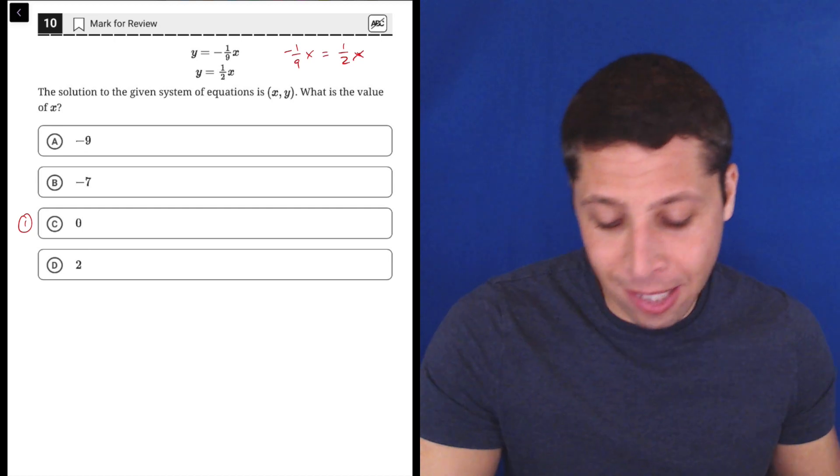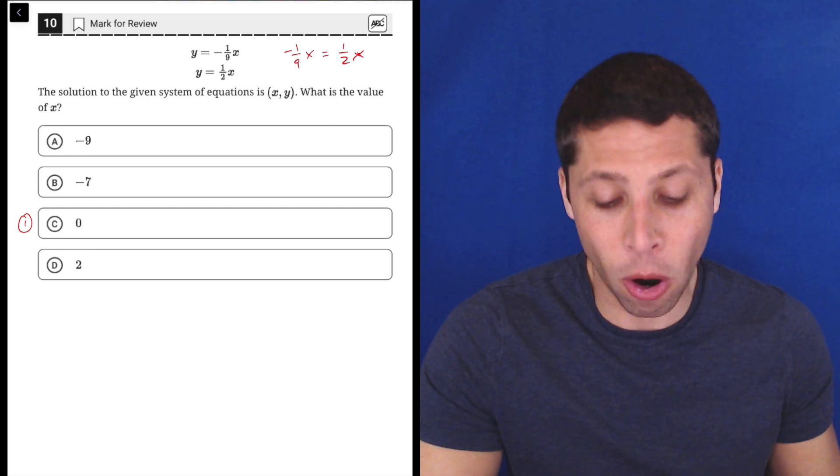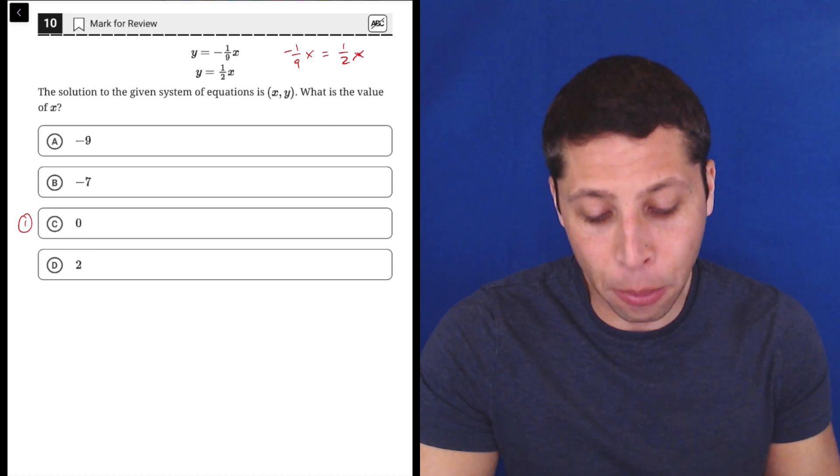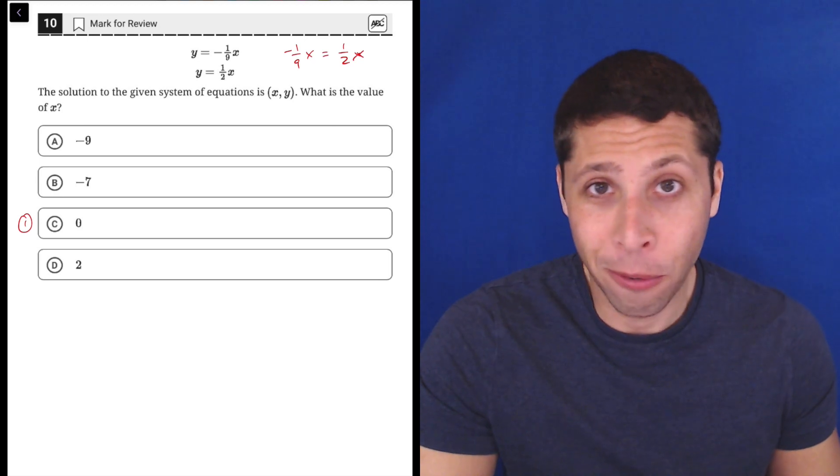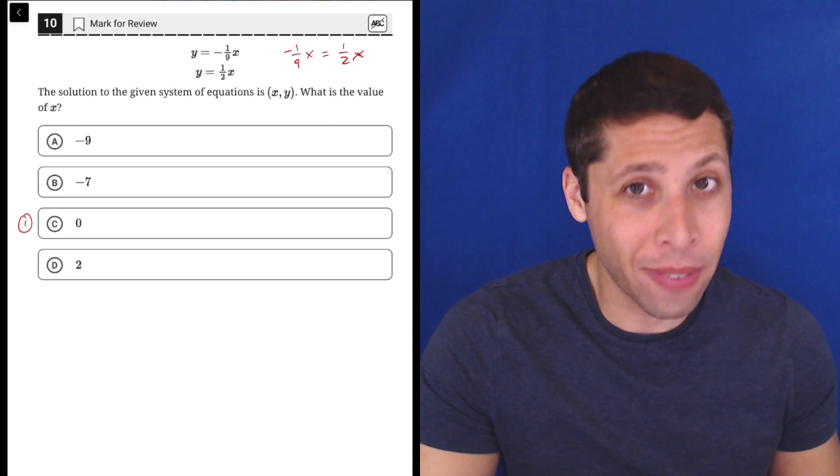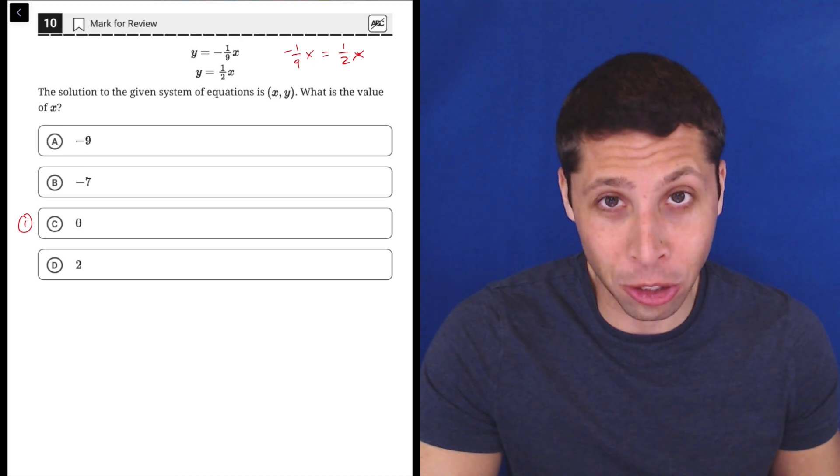This would be my first guess because zero is so easy. All we do is take that and put that into each equation for the x. And if we get the same y value for both, then we know we're in good shape.